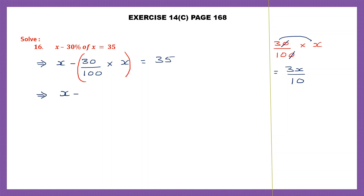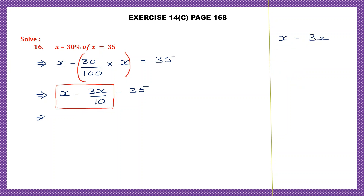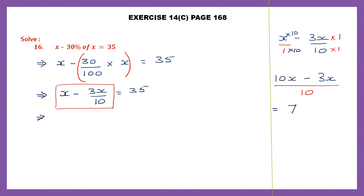So here we have x minus 3x by 10 is equal to 35. We need to work out this subtraction of fractions. Let's give x the denominator 1. The LCM of 1 and 10 is 10. So 1 into 10 is 10, and x into 10 is 10x, minus 3x into 1 is 3x. So we have 10x minus 3x, that is 7x by 10.